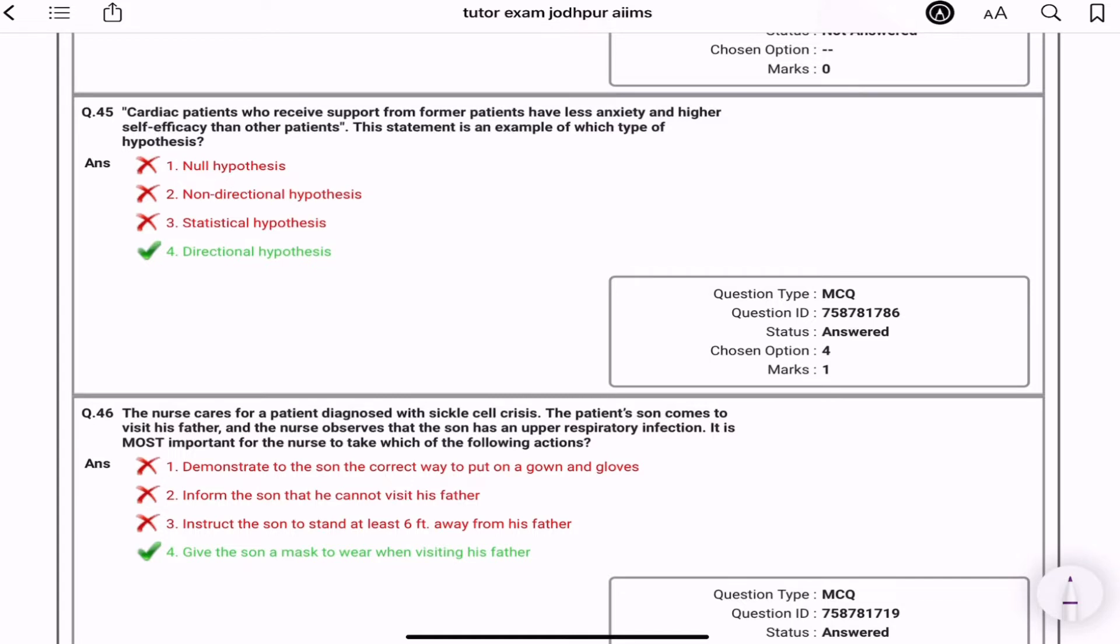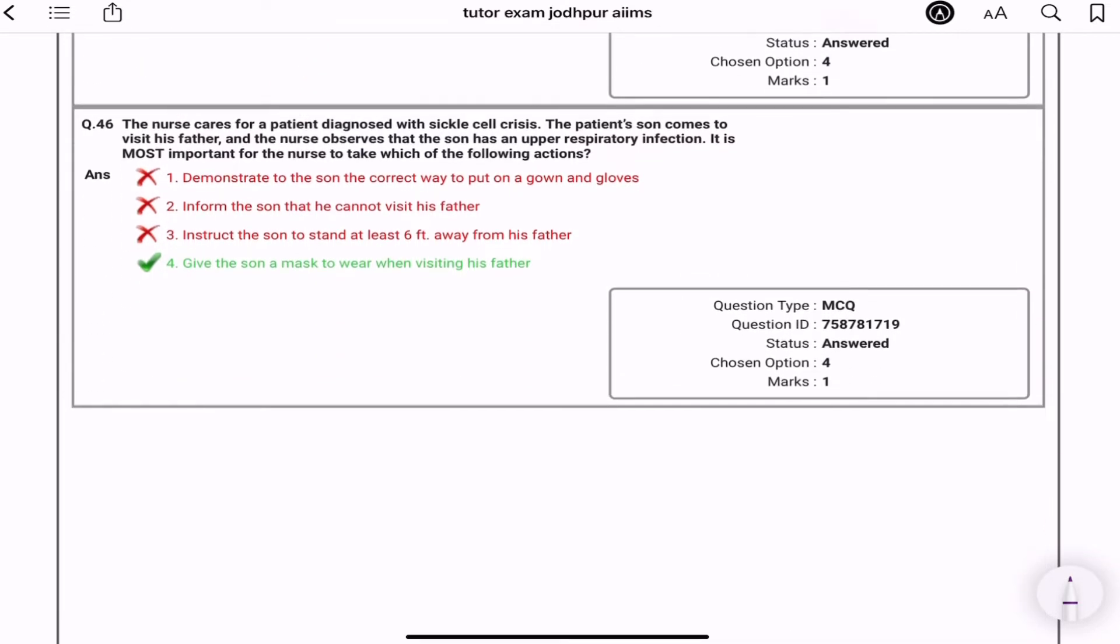The nurse care for patient diagnosed with sickle cell crisis. The patient's son comes to visit his father and the nurse observed that the son has upper respiratory infection. It is most important for the nurse to take which of the following actions? Aapne kya karna hai - give the son a mask to wear when visiting his father. Aap bol to nahi sakti ho na kisi bhi son ko demonstrate to the son that correctly to put gown and gloves. Gown and gloves se kya hoga? Respiratory infection hai, mask to pahenna hai.